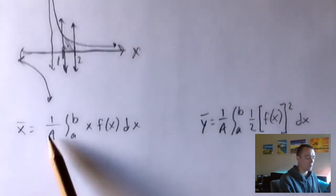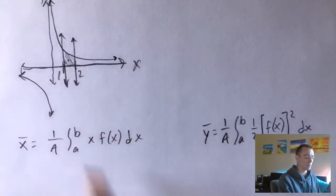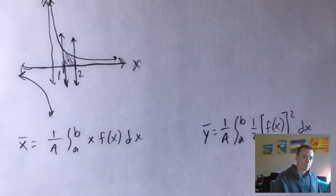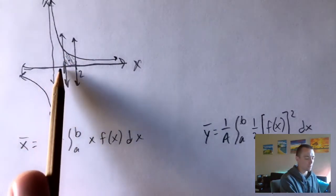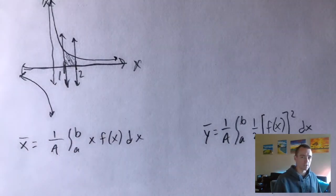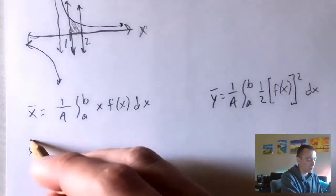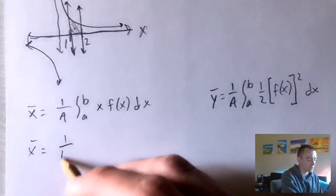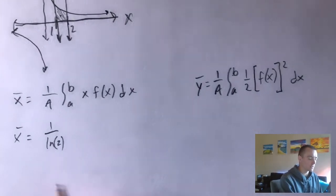Capital A in the equations represents the area of the region, so the first thing we need to do is figure out that area. Essentially, this comes down to the integral from 1 to 2 of 1 over x. If you evaluate that integral, you find that the area of this region is natural log of 2. So we're going to use ln(2) for the area in both equations.